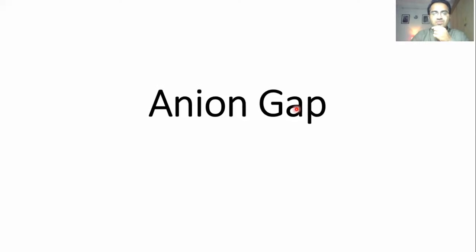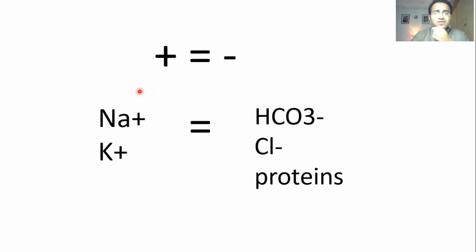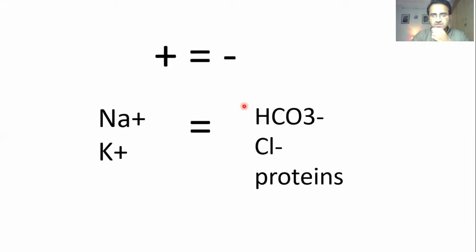Today we'll be talking about anion gap and how anion gap helps us find out the cause of metabolic acidosis. Basically, all the positive and negative charges in the body are equal. If you calculate the concentration of all the positively charged ions and add them up, and also calculate concentration of all the negatively charged ions and add them up, both sides will be equal.